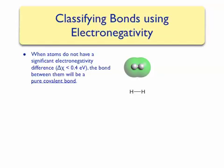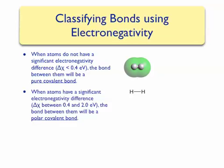No one atom has more electron density than the other in the hydrogen molecule. When two atoms have a significant electronegativity difference — somewhere between 0.4 and 2 electron volts — electrons will not be equally shared. The atom with the higher electronegativity will have more electron density surrounding it than the atom with the lower electronegativity. We call this type of bond a polar covalent bond.